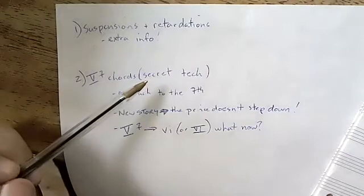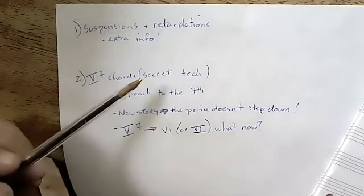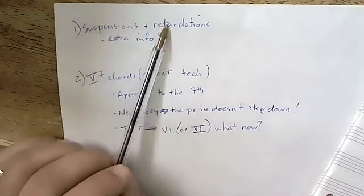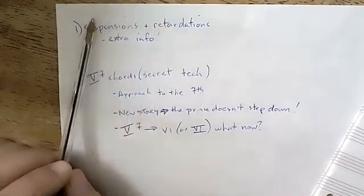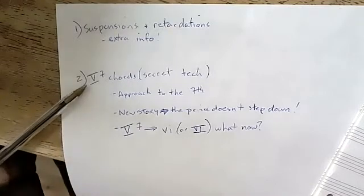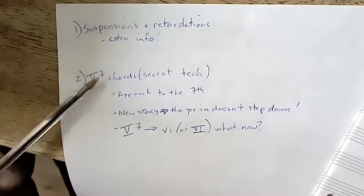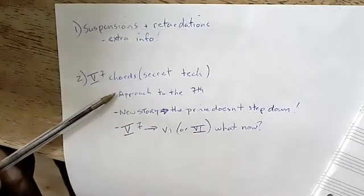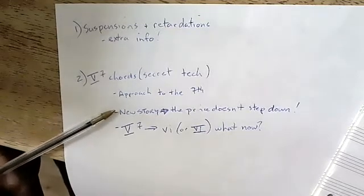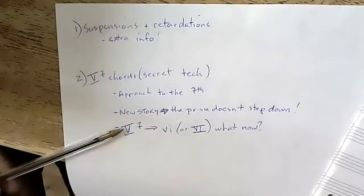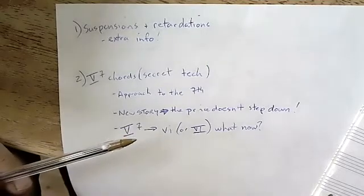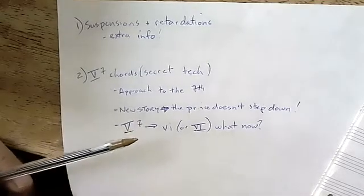In this recording for your Wednesday class, we're going to go over information about suspensions and retardations from chapter 10. Then we'll jump ahead to chapter 13 and talk about extra information about five-seven chords and resolving them. This topic is called broaching the seventh of the chord. There's a new scenario where the prince doesn't step down, and finally, what if we resolve the five chord with a seventh to a six chord instead of a one chord?